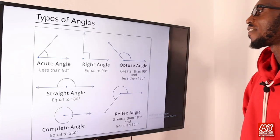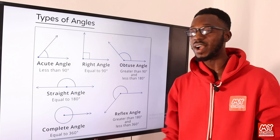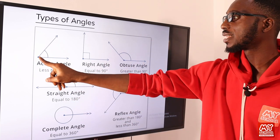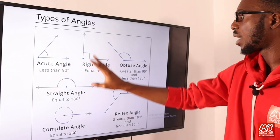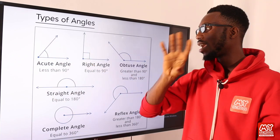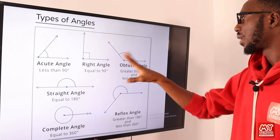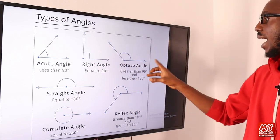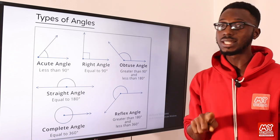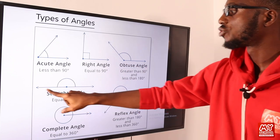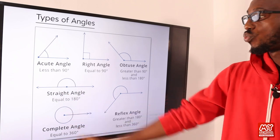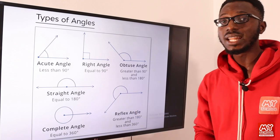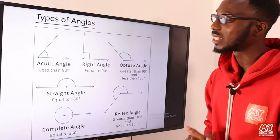In the same representation, we see the types of angles. We have an acute angle — it's less than 90. We have 90 degrees, which is the right angle. We have obtuse angle — bigger than 90 but less than 180. We have the straight angle, also called a supplementary angle, which is 180 degrees. We have the complete angle, which is 360 degrees, and the reflex angle — bigger than 180 but not up to 360.